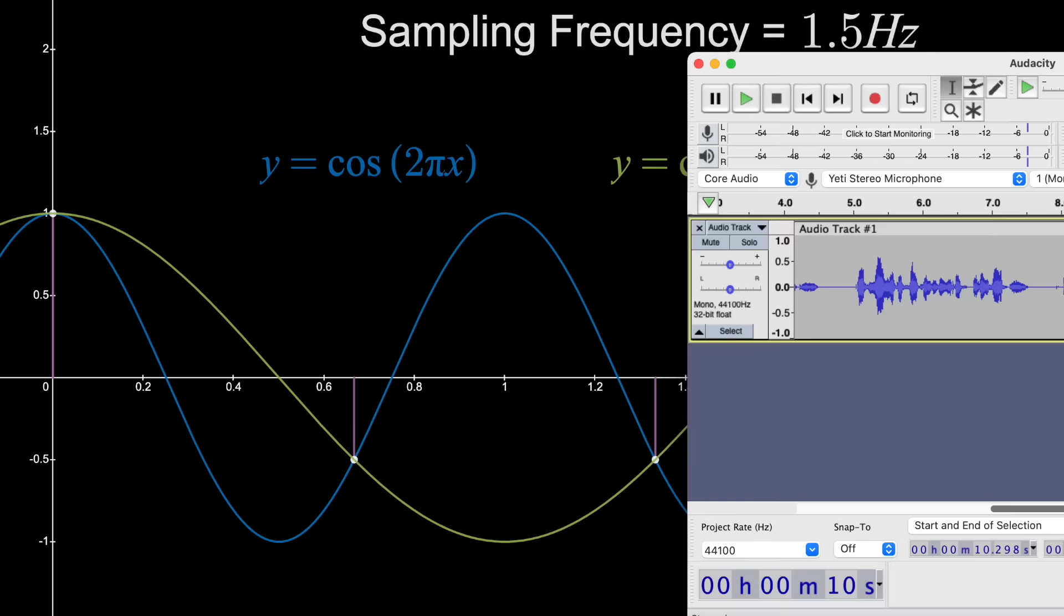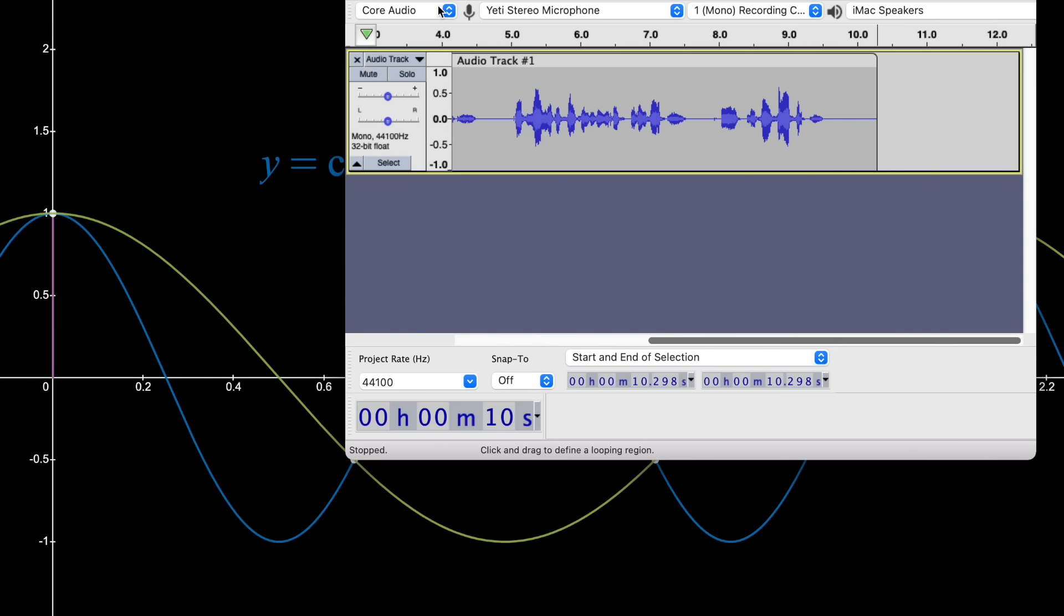This is why, for example, when I open Audacity to record this video, there's a preset to a frequency of 44.1 kHz. That number is slightly more than double the maximum frequency humans can hear, 20 kHz.